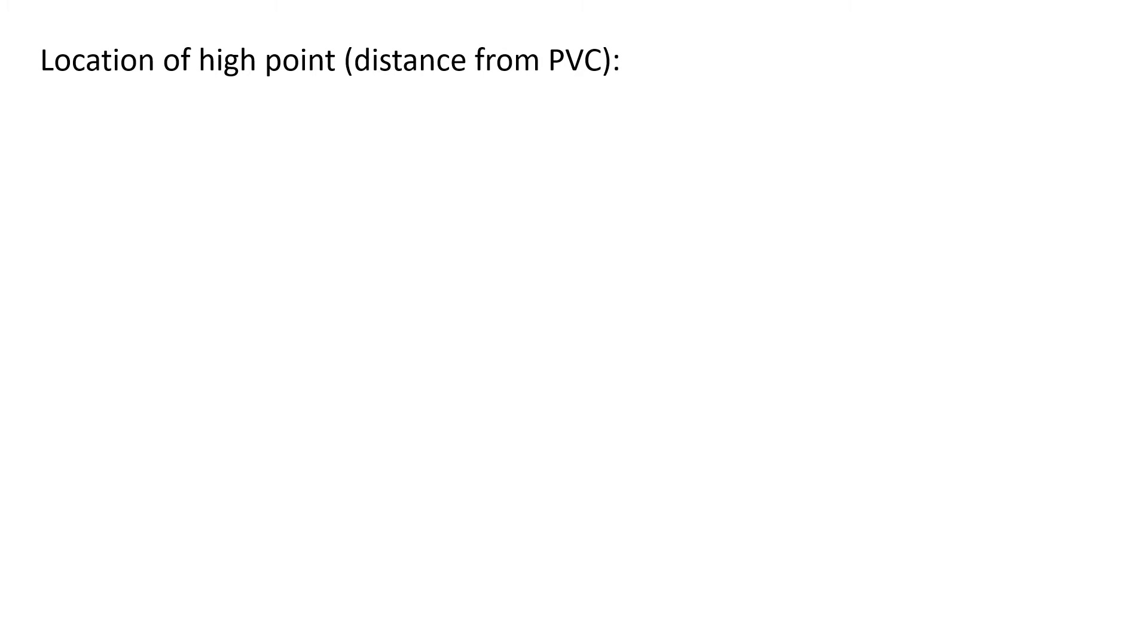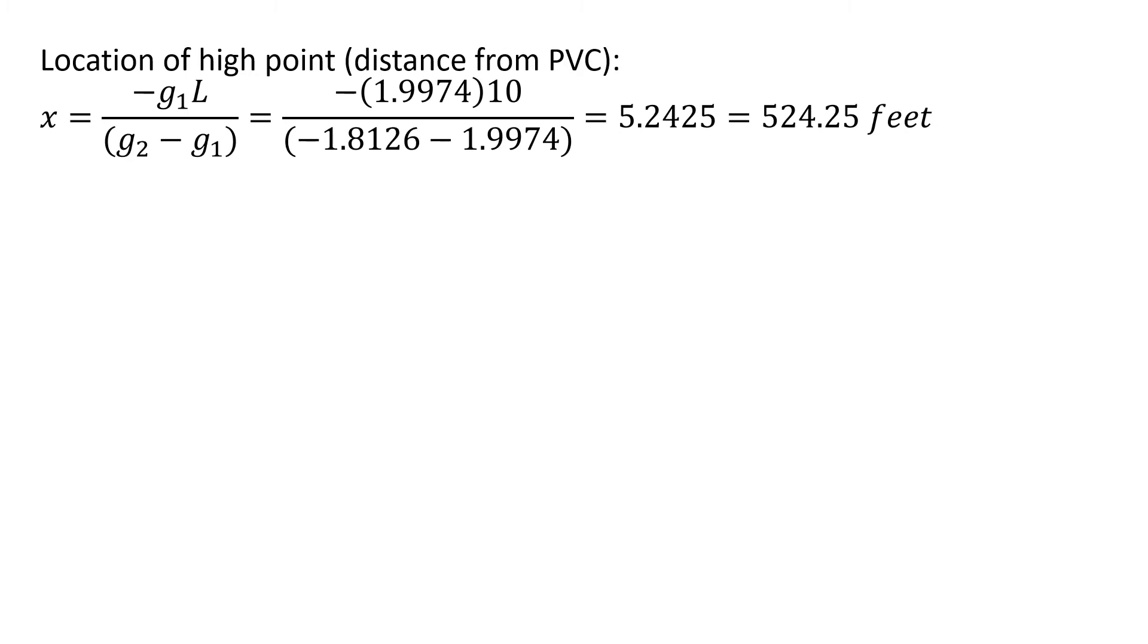We can now find the location of the high point as the distance from the PVC. X equals negative G1 times L divided by (G2 minus G1) is going to give us an X of 5.2425 stations or 524.25 feet.